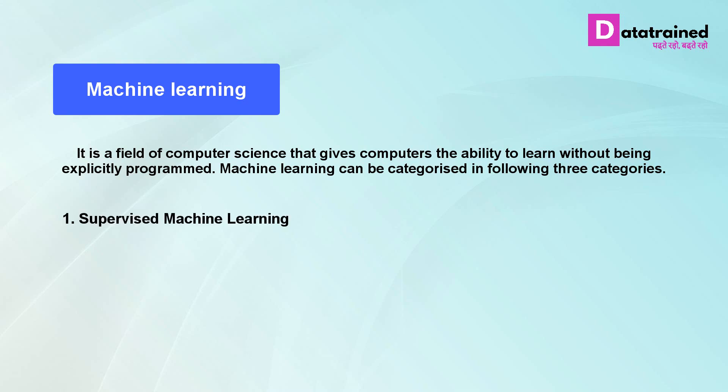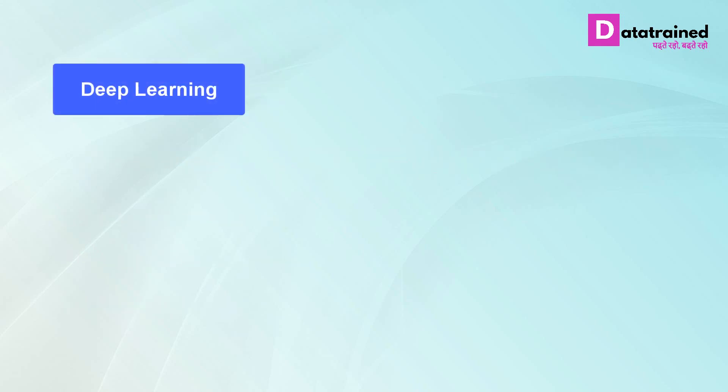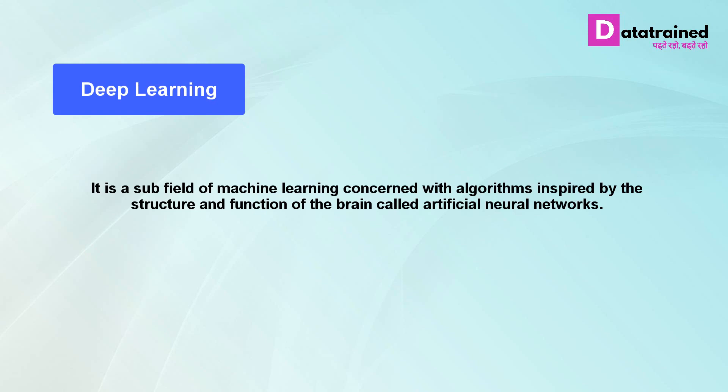Supervised machine learning, unsupervised machine learning, and reinforcement learning. Deep learning is a subset of machine learning concerned with algorithms inspired by the structure and function of the brain called artificial neural networks.